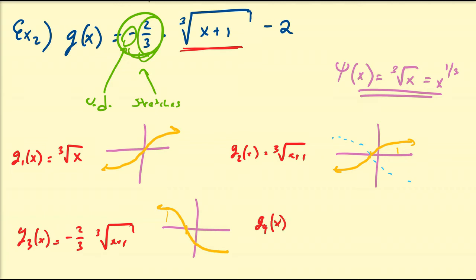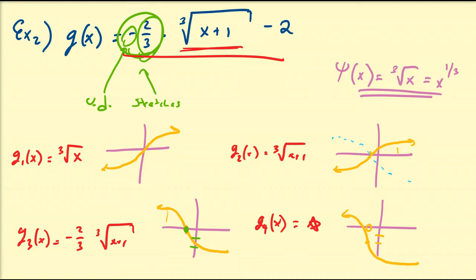And then g4(x), which is going to be equal to our target graph. We're just going to take this and shift it down 2 units, focusing on a reference point and moving it down 2. We're picking that curve up and moving it down — corresponding points shift together. That's the basic idea of how to perform transformations when you have all of those transformations in one function.